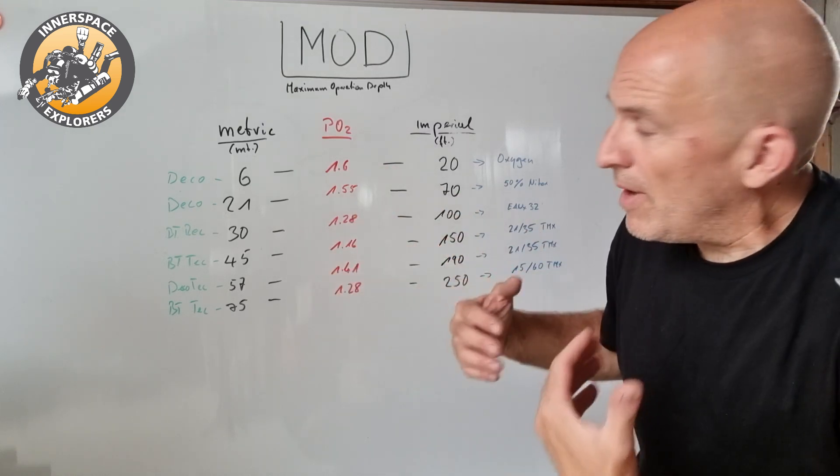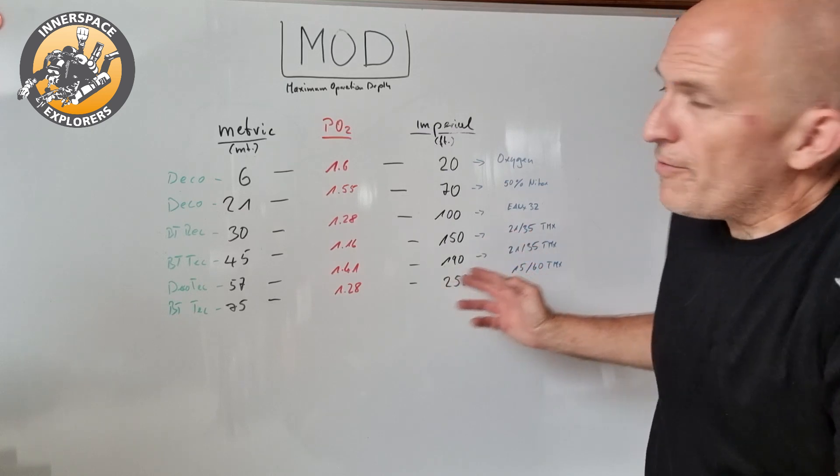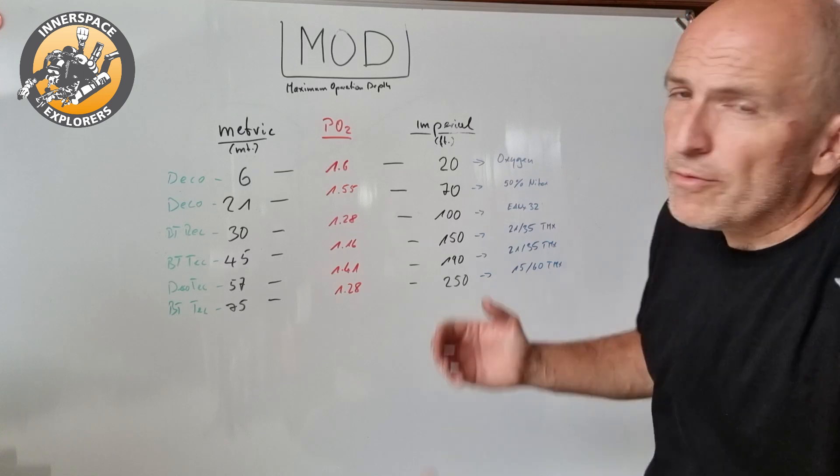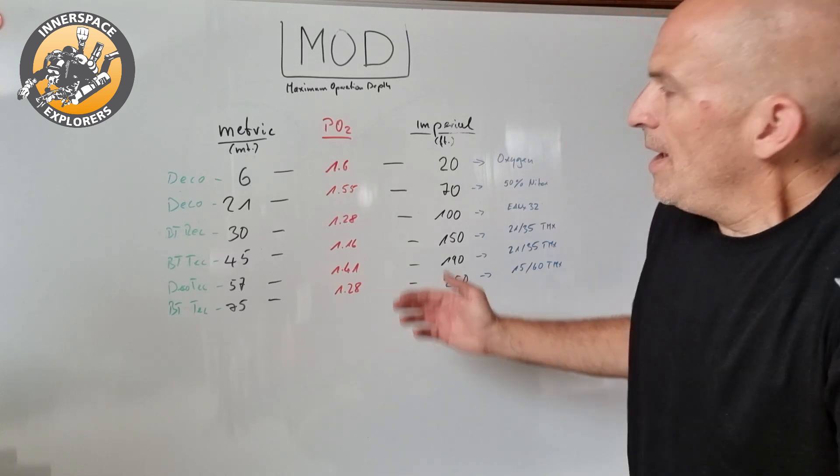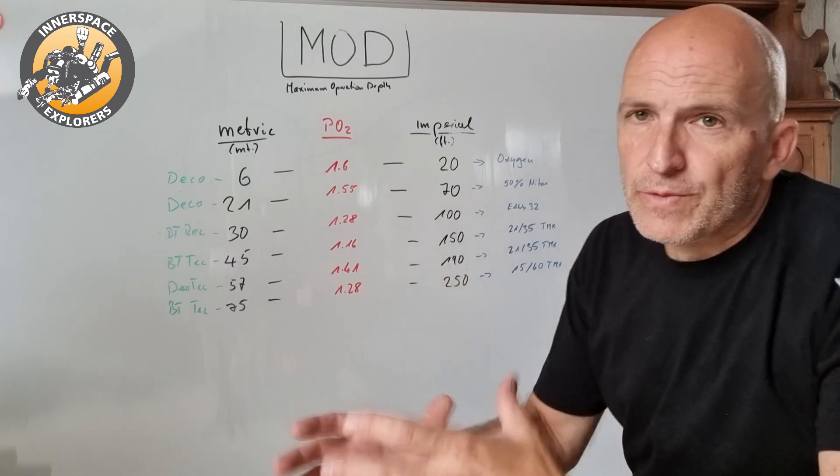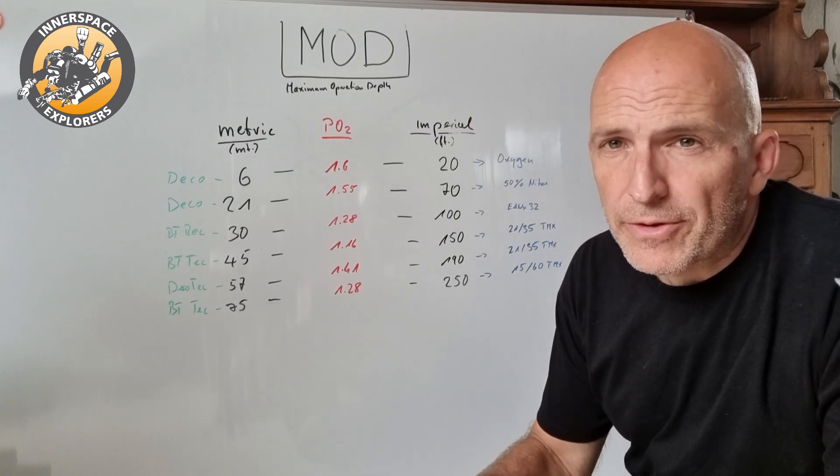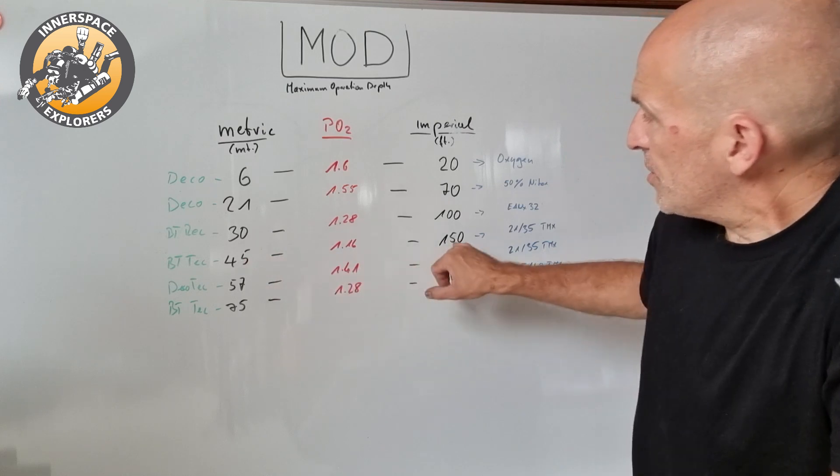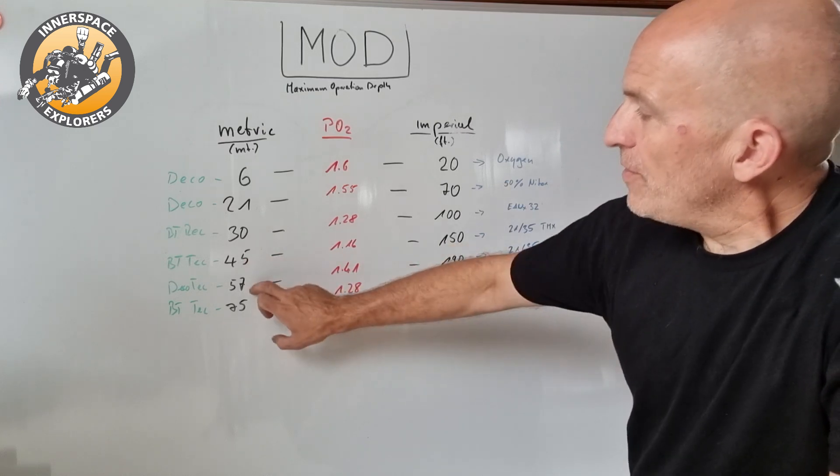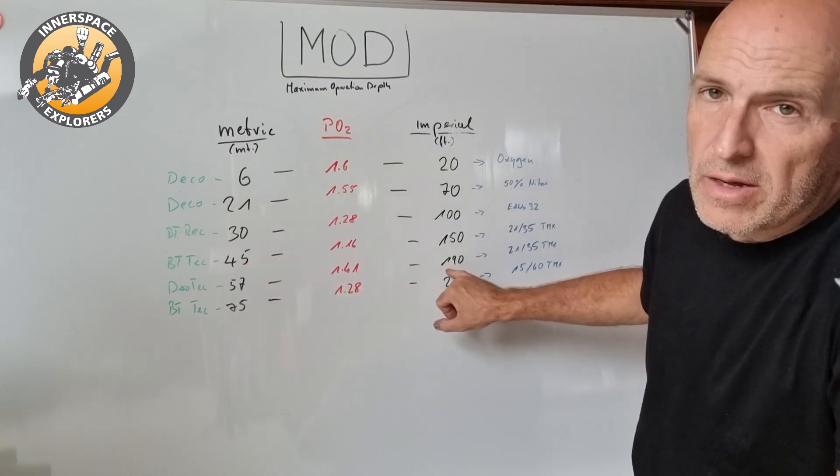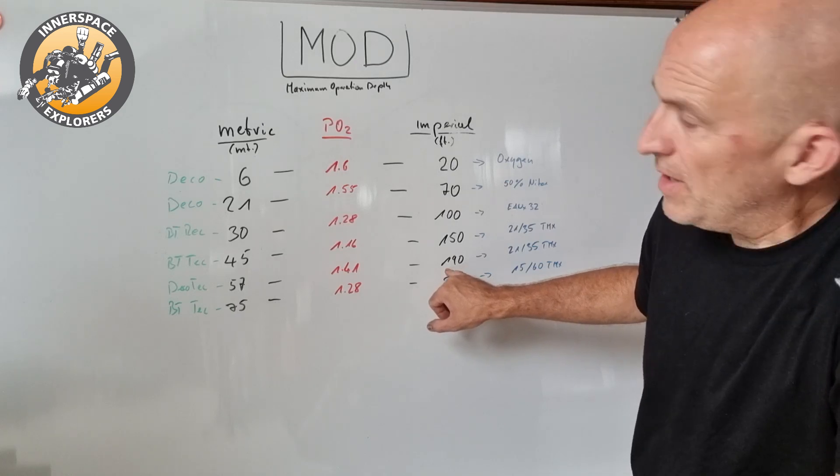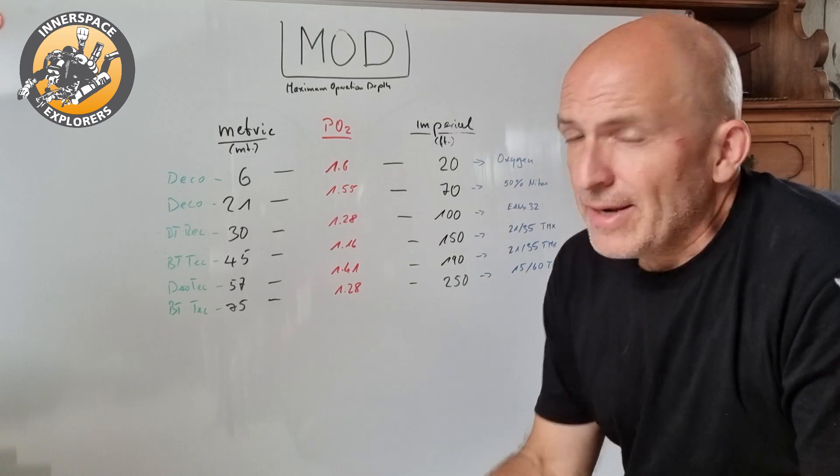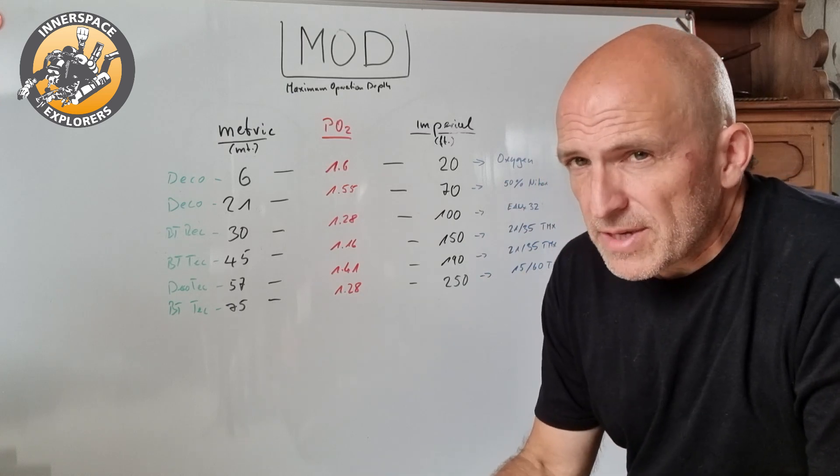Now we have the prime example in my opinion, which is 21/35, a trimix mixture containing 21% oxygen, 35% helium, 44% nitrogen. You find bottles with trimix 21/35 with two different labels. One would be 45 meters or 150 feet, or 57 meters which is 190 feet. You might scratch your head like how can that be, and it depends what I want to use this tank for.